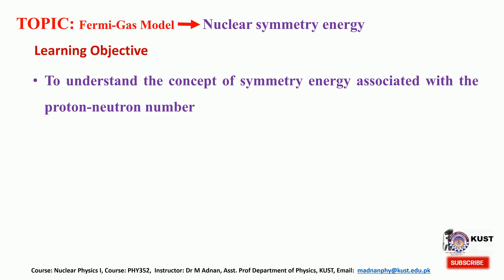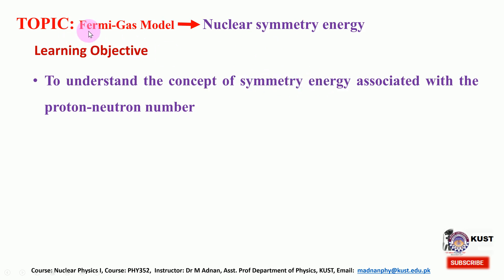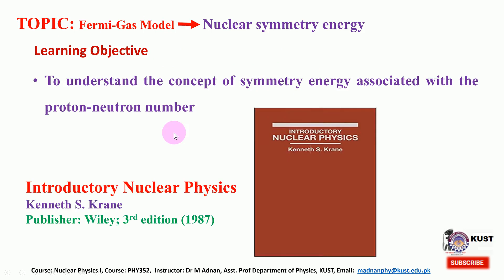In the binding energy expression we discussed the asymmetry term. The asymmetry in the proton and neutron number gives rise to an increase in the system energy, and as a result this decreases the binding energy. In this lecture we will discuss the mathematical derivation of the symmetry energy based on the Fermi gas model. We are following the book Introductory Nuclear Physics by Kenneth S. Crane, third edition.